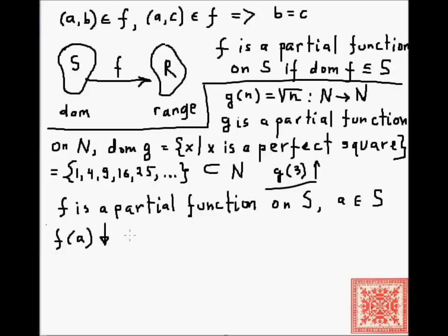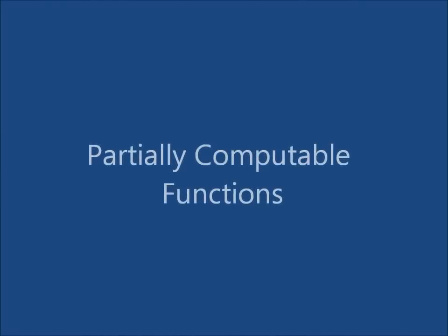So f(a) down arrow if a is in the domain of f, and f(a) is undefined, up arrow, if a is not in the domain of f. For example, 3 is not in the domain of g, so g(3) is not defined.